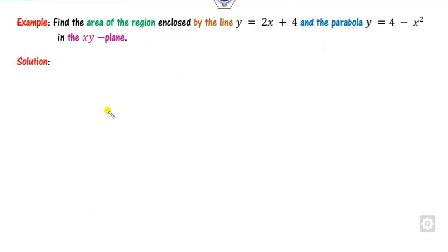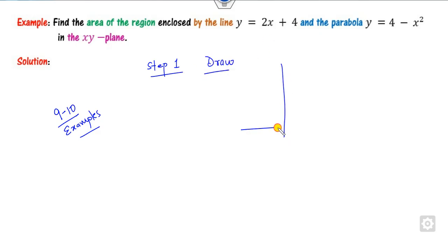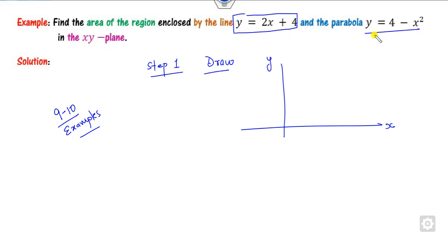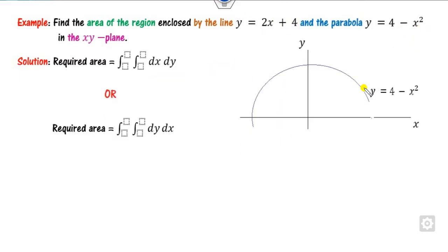We will discuss about 9 to 10 examples in this video so that you can easily understand the concept. Step 1: always draw the graph. This is a Cartesian coordinate example. Draw x and y. The graph of y = 2x + 4 and y = 4 - x². First, draw the parabola 4 - x². You can find the area using dx dy or dy dx depending on your preference. The target is to find the limits.